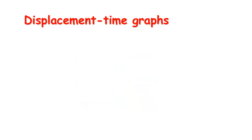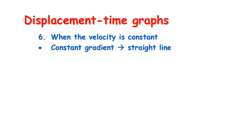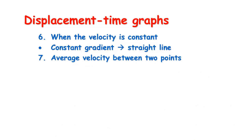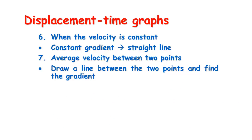We can tell when it's moving with constant velocity because it has a straight line — a constant gradient means the same amount of displacement every unit of time. We can also determine an average velocity over a particular time by drawing a line between the two points and finding the gradient, or by calculating final displacement minus initial displacement divided by the time interval. Both methods work.